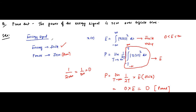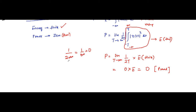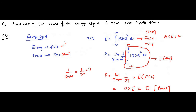Very simple. First, state the basic condition of energy signal: energy is finite. Write the energy expression as the integral from -∞ to +∞ of x(t)² dt — this has a finite value, which is given. Then write the expression of power as limit T→∞ of (1/2T) integral from -T to T of x(t)² dt. When we substitute T→∞, the highlighted portion becomes the energy expression E, which is finite. So power becomes (1/2T)·E → 0. Proved.